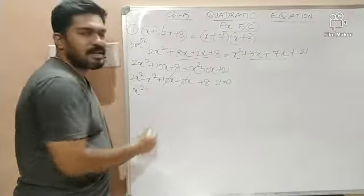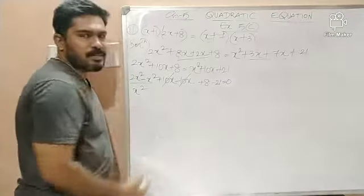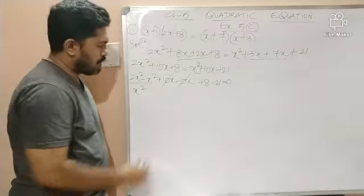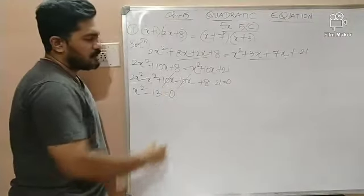And 10x minus 10x. They both get eliminated. Now, what is 8 minus 21? Minus 13 which is equal to 0.